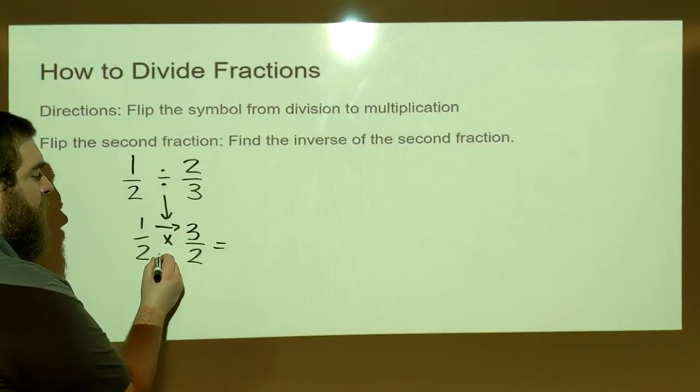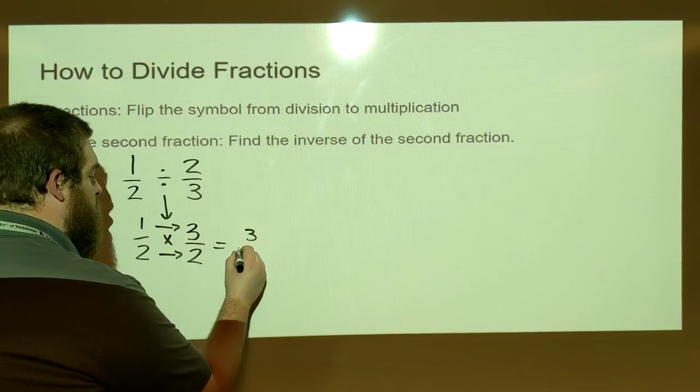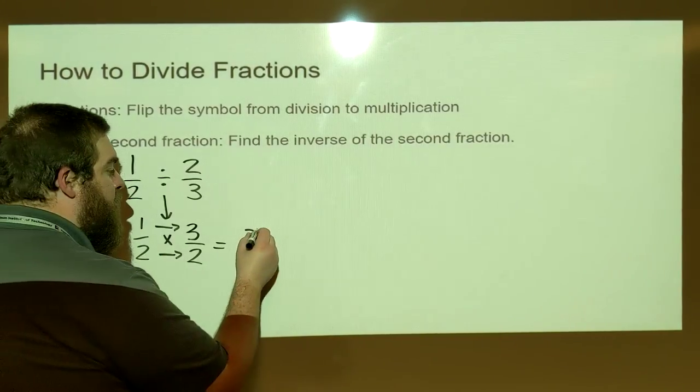Now we multiply straight across the top and straight across the bottom. One times three is three. Two times two is four. So our final answer would be three-fourths.